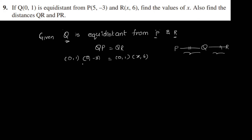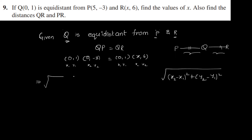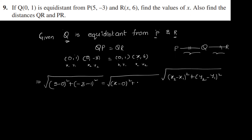QP means we have to find the distance between two points. We assume coordinates X1, Y1 and X2, Y2. The distance formula is: root of (X2 minus X1) whole square plus (Y2 minus Y1) whole square. That gives square root of (5 minus 0) whole square plus (minus 3 minus 1) whole square, equal to square root of (x minus 0) whole square plus (6 minus 1) whole square. The square roots cancel. 5 minus 0 is 5, and 5 squared is 25.